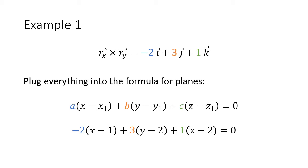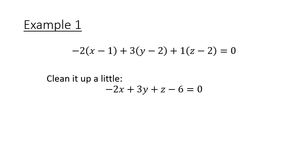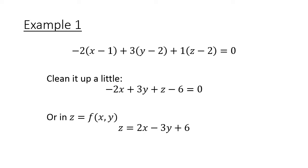Taking the cross product of the two tangent vectors gives negative 2 i-hat plus 3 j-hat plus 1 k-hat. Plugging into the plane formula with normal components A = negative 2, B = 3, C = 1, and point (1, 2, 2): distributing and combining constants gives negative 2x plus 3y plus z equals negative 6. Solving for z: z equals 2x minus 3y plus 6. That's exactly what we started with — the original plane. Of course: the tangent plane to a plane is itself, which is a good sanity check.